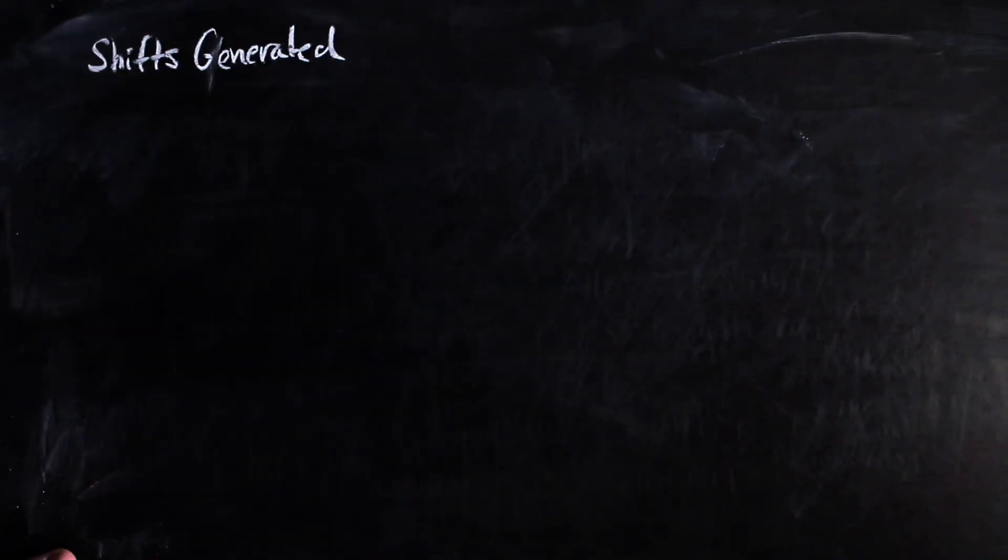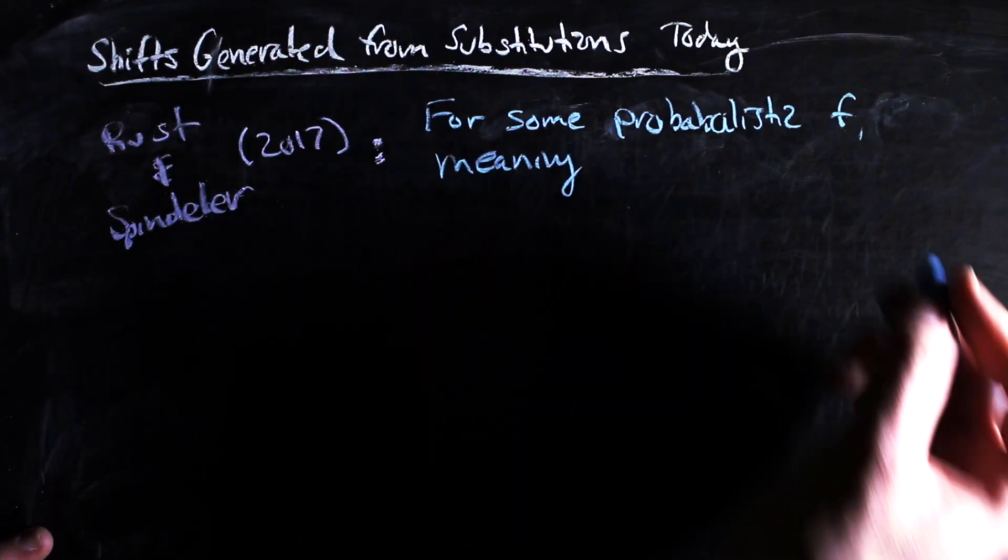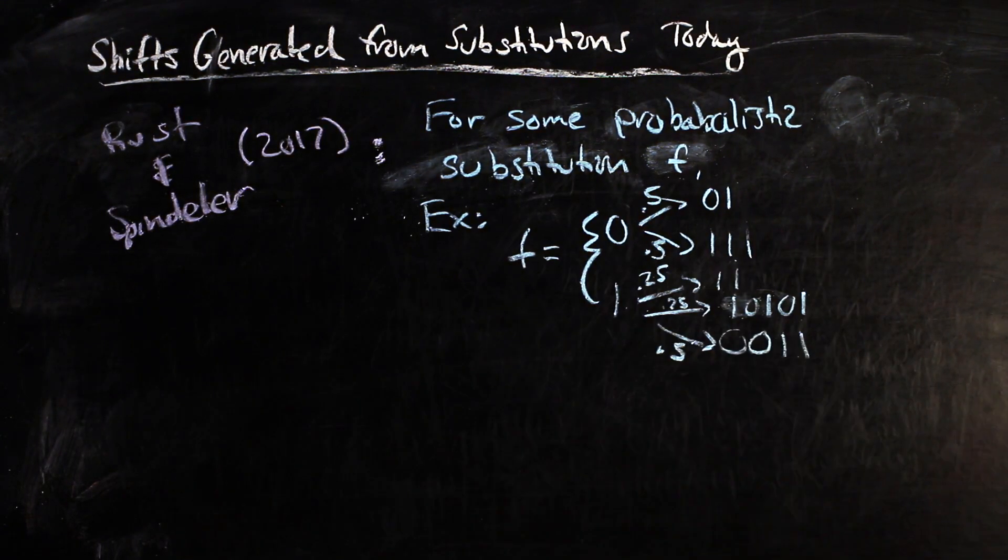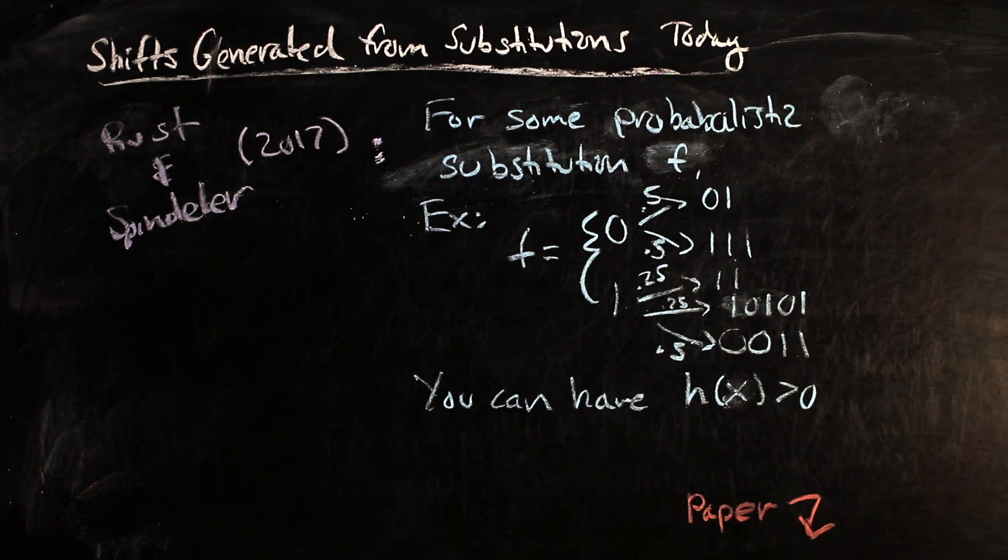Shifts generated from substitutions are not a closed book in mathematics. In a recent paper, Rust and Spindler showed that if a substitution is defined probabilistically, you can have a system with positive entropy. I'll link to the paper below if you're interested.